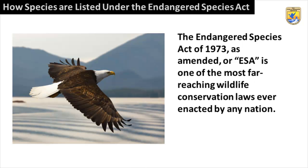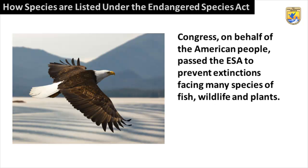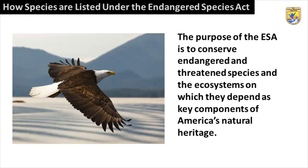The Endangered Species Act of 1973, as amended, or ESA, is one of the most far-reaching wildlife conservation laws ever enacted by any nation. Congress, on behalf of the American people, passed the ESA to prevent extinctions facing many species of fish, wildlife, and plants. The purpose of the ESA is to conserve endangered and threatened species and the ecosystems on which they depend as key components of America's natural heritage.